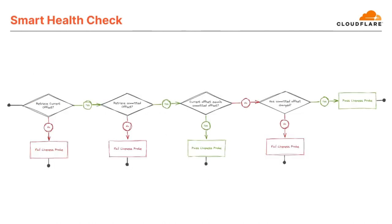First, we get the current offset from Kafka — if this fails, we fail the liveness probe, since it likely means a connectivity issue. Next, we get the latest committed offset from the consumer, stored in memory. If the current offset equals the committed offset, we're up to date with no messages left to process, so we pass the liveness probe. Otherwise, we check if the committed offset is the same as it was on the last health check run. If it is, something has stalled because there are messages waiting, so we trigger a restart. If the committed offset has changed, we're processing messages and can pass the liveness probe.